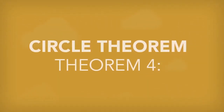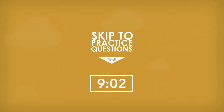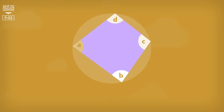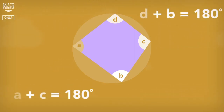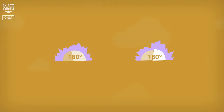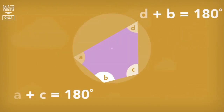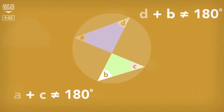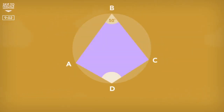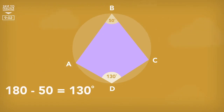Circle Theorems. Theorem 4. The opposite angles of a cyclic quadrilateral add up to 180 degrees. It doesn't matter where the corners of the quadrilateral are on the circumference, as long as they are all on the circumference and don't cross each other. If they do, we get something else, which is explained in theorem 5. So if we knew angle ABC was 50 degrees, the angle ADC would always be 130 degrees.